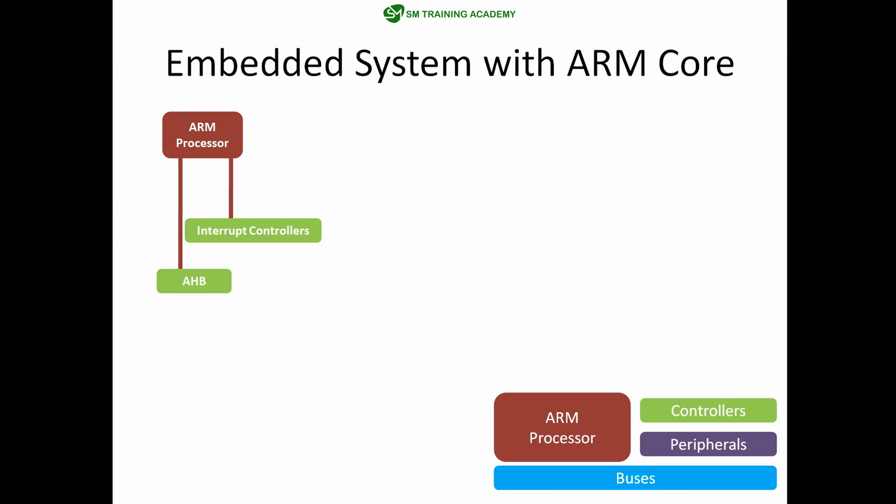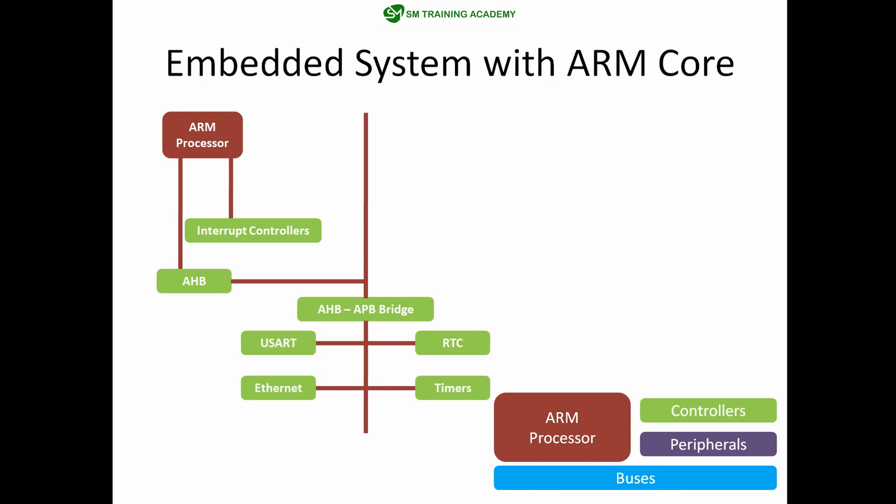AHB stands for Advanced High Performance Bus, and this bus is further connected to an AHB bridge. The bus is divided into two parts: AHB and APB. APB stands for ARM Peripheral Bus or Advanced Peripheral Bus, and peripherals like UART, RTC, Ethernet, and timers are connected to the APB bus. You must choose peripherals based on your requirement, since the AHB bus operates at a higher frequency than the APB bus.